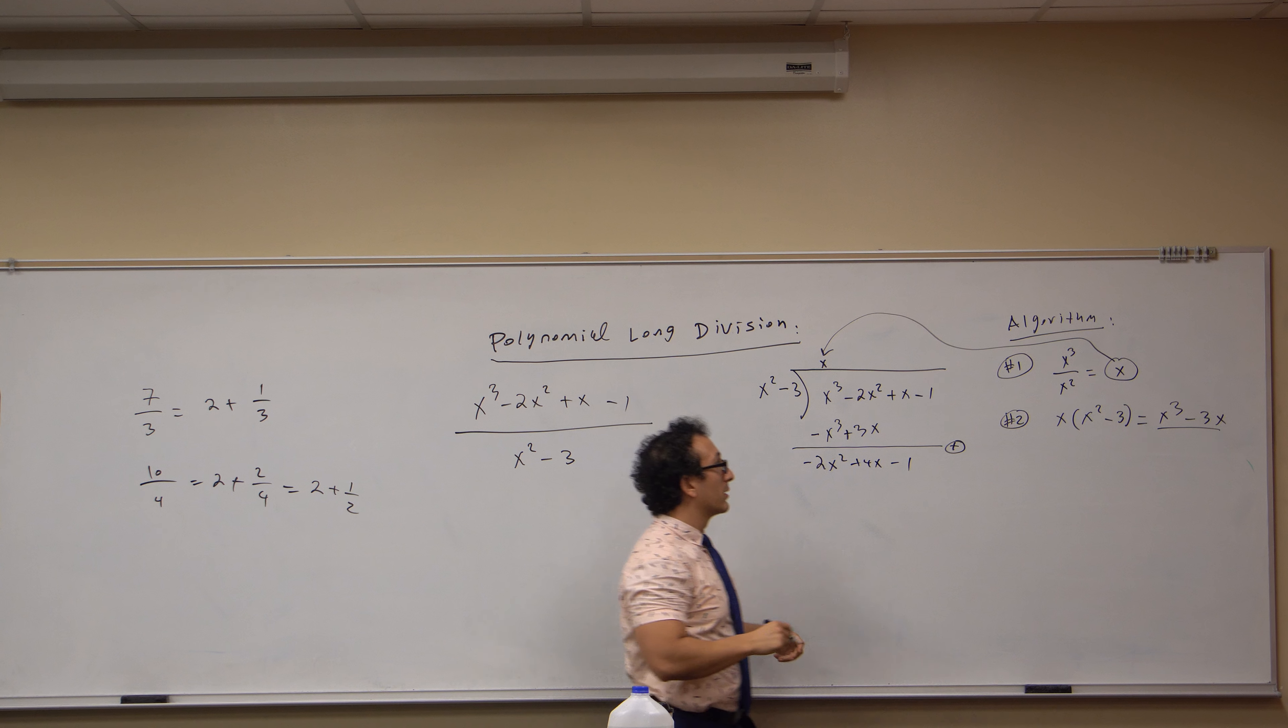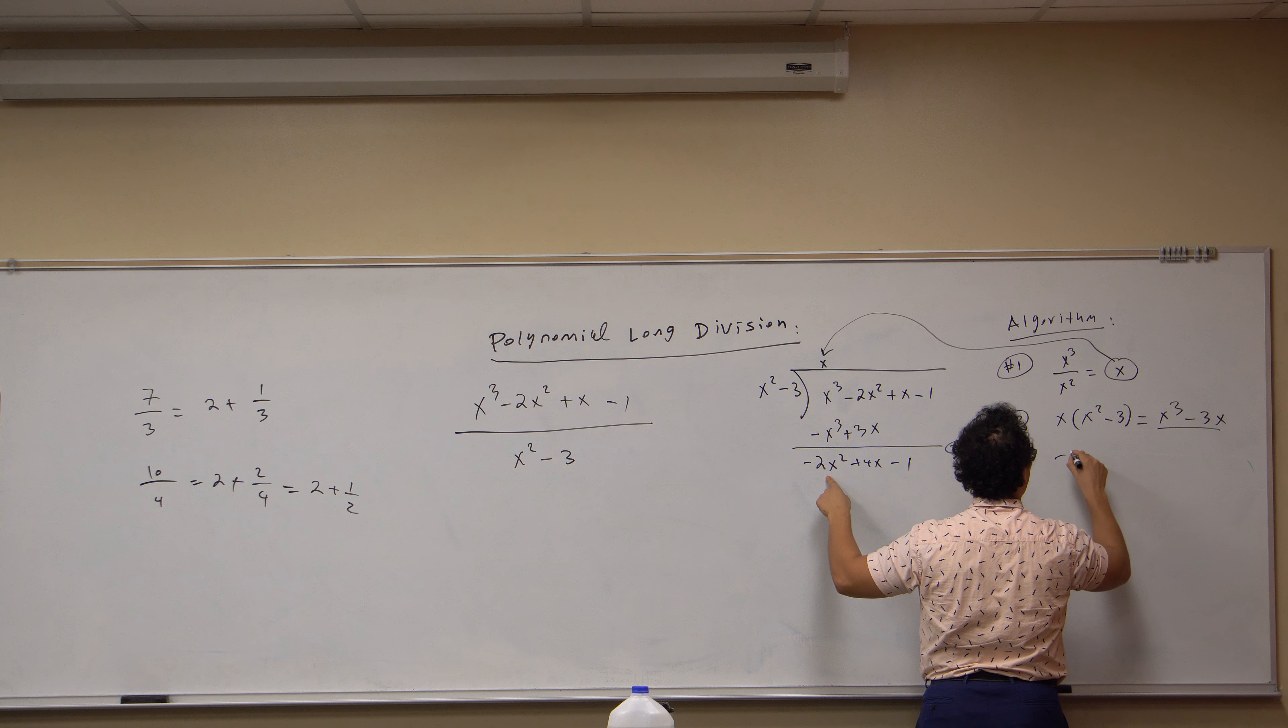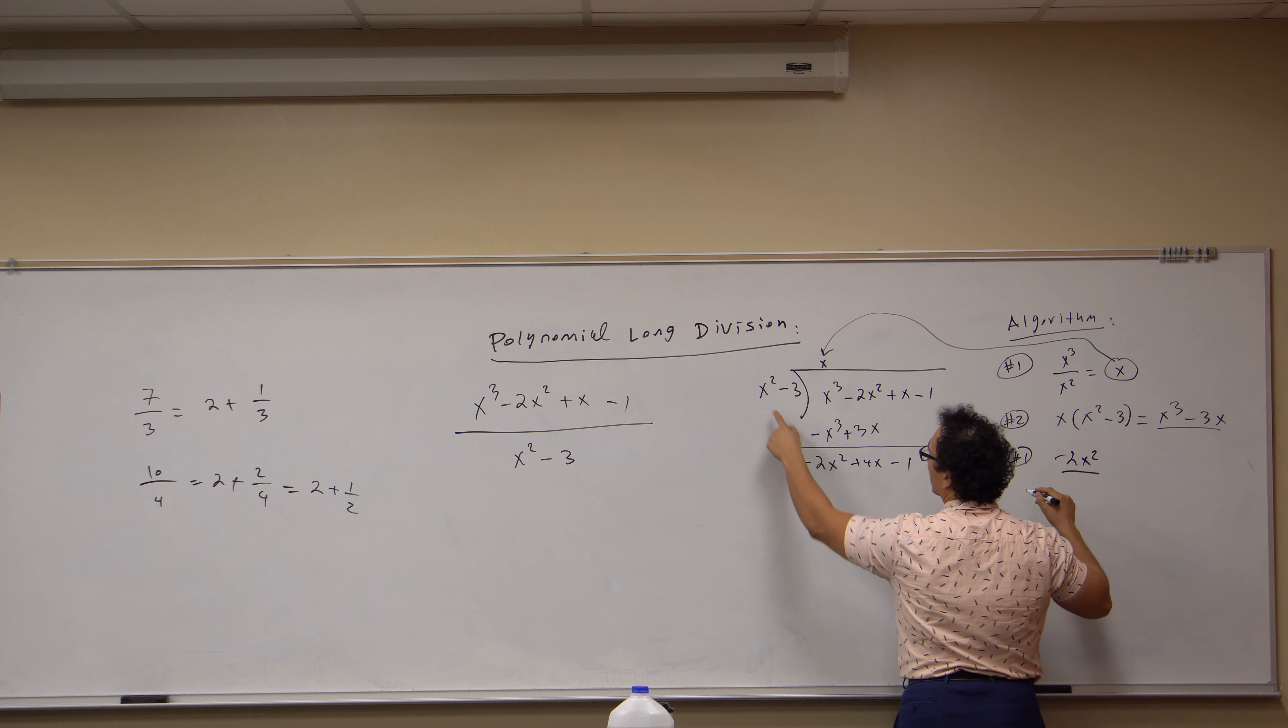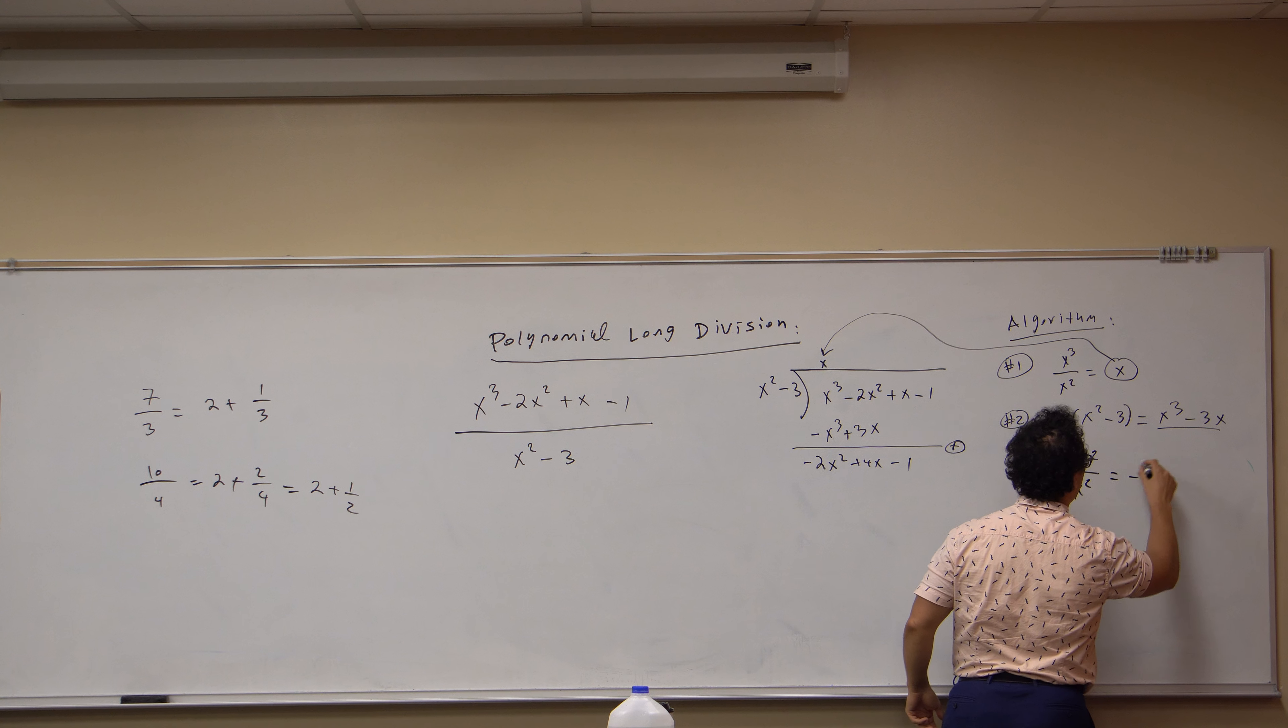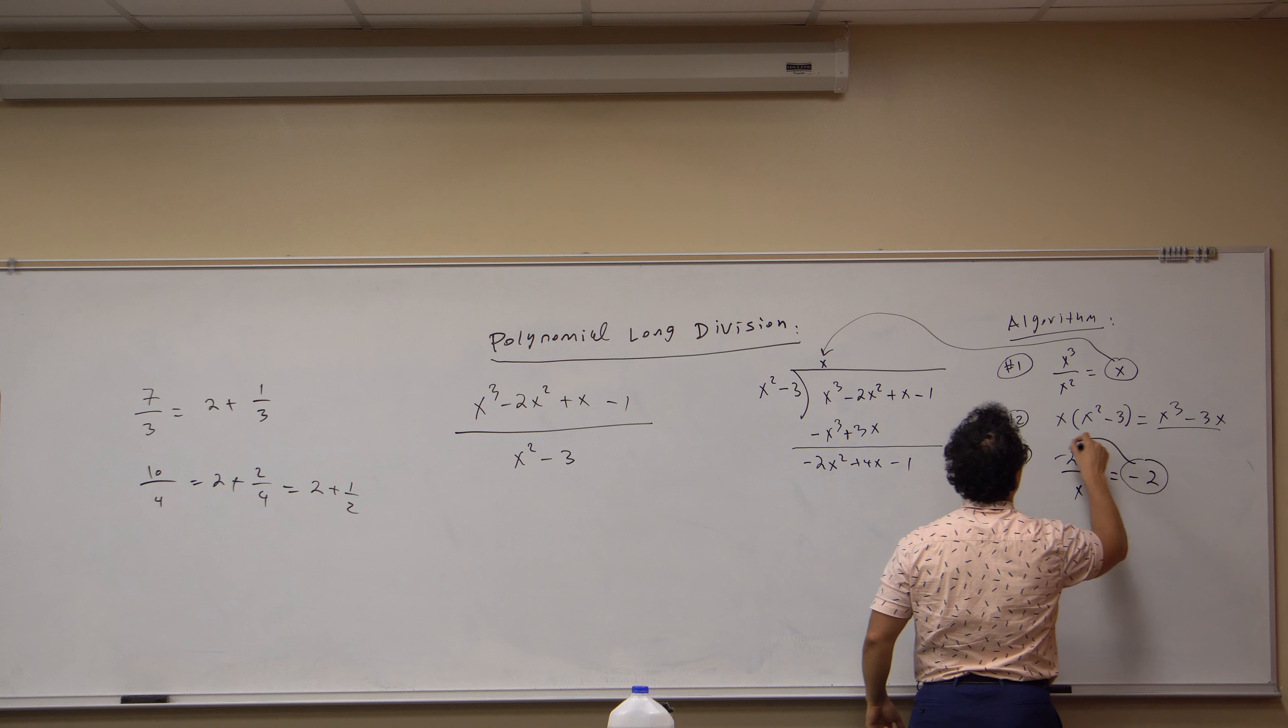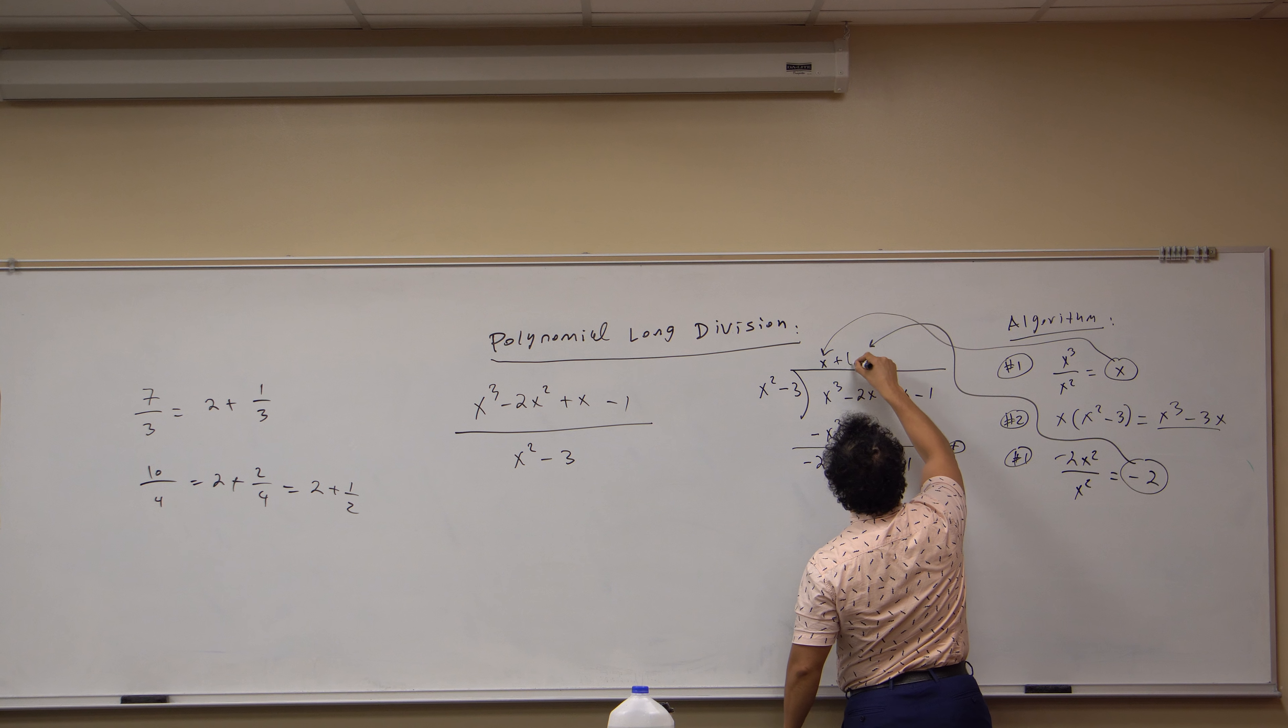Now we begin the algorithm again. Another step one. Get the leading term, four x, divided by the leading term here, x squared, compute the ratio, which is negative two. We get this negative two, bring it here, so I add a negative two.